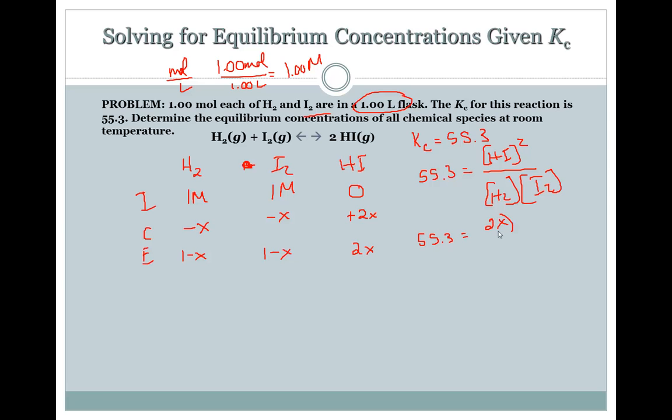If Q is equal to K, the system is at equilibrium. It just stays there at dynamic equilibrium. If Q is less than K, there's too much reactant and the equation shifts to the right. If Q is greater than K, there's too many products and the equilibrium shifts to the left.